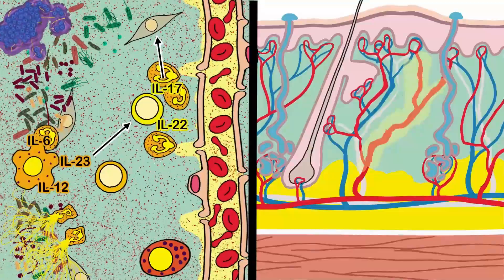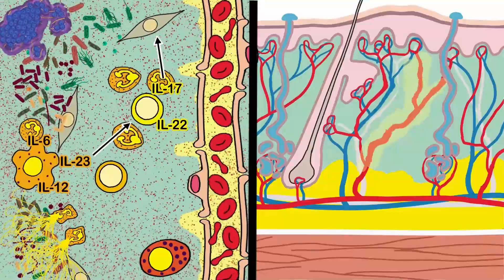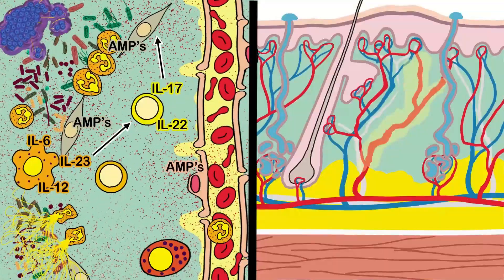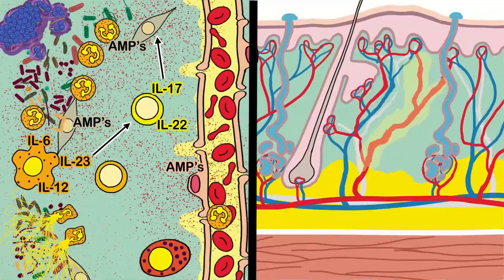Interleukin-17 binds with receptors on fibroblast and endothelial cells, inducing them to produce antimicrobial peptides and chemokines that recruit even more phagocytes to the site of battle.